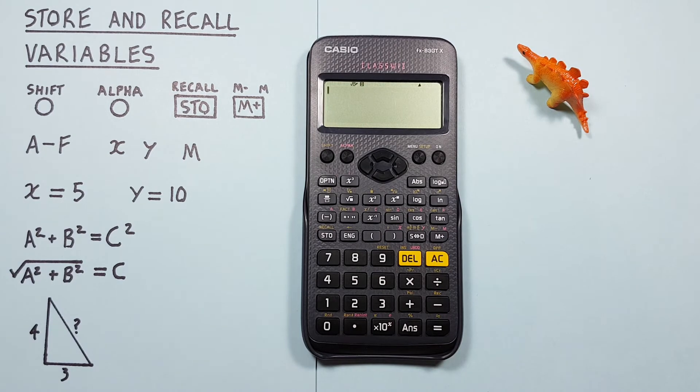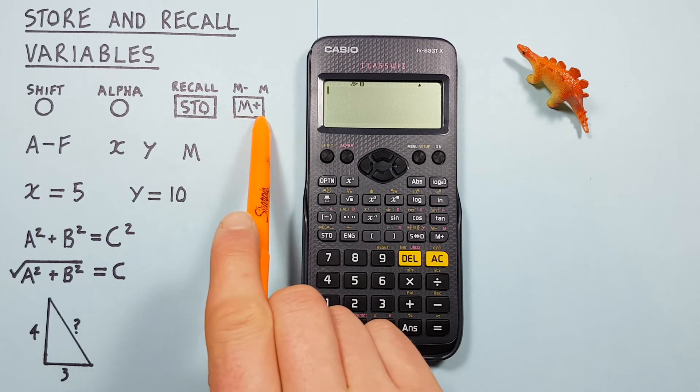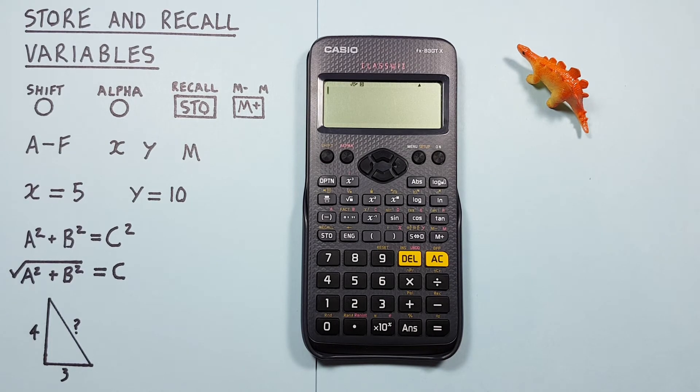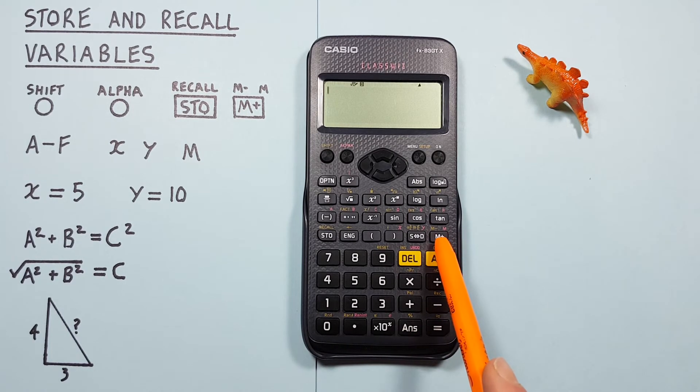This calculator also has an M or independent memory variable represented by this key here. The independent memory is unique because you can add or subtract to it using the M plus or M minus function.